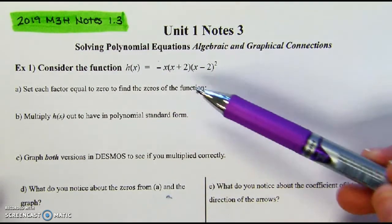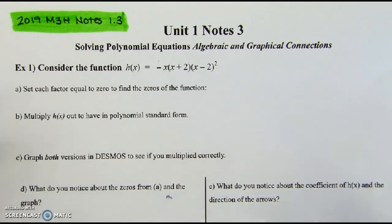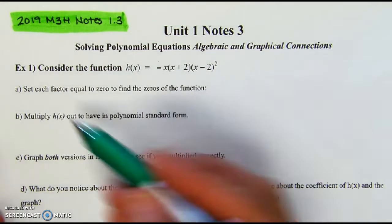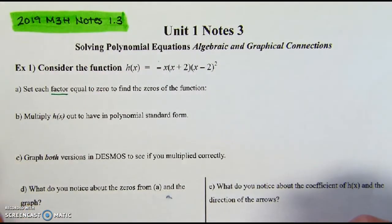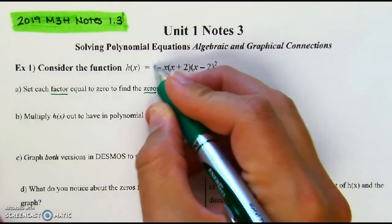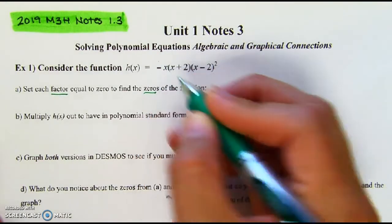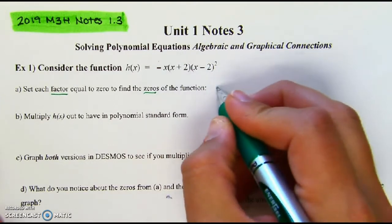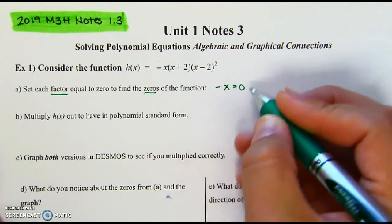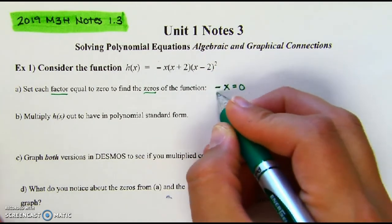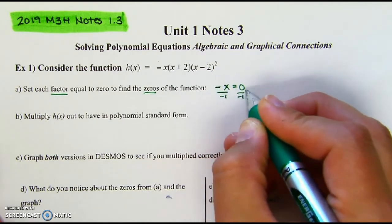We're going to consider this function h. Remember, graphs look a lot different than y = mx + b. For part (a), we set each factor equal to zero to find the zeros of the function. The first factor in front is negative x — anything being multiplied is a factor — so we set negative x equal to zero and solve for x.